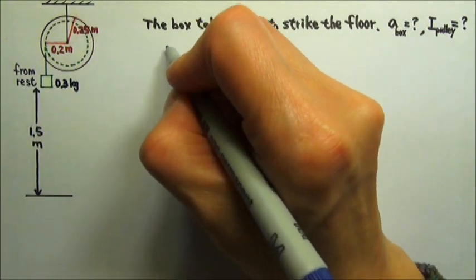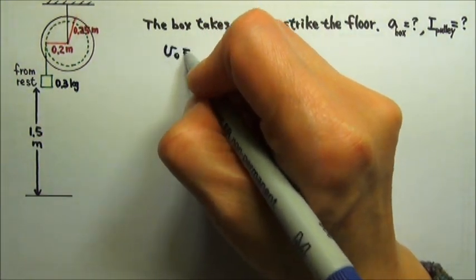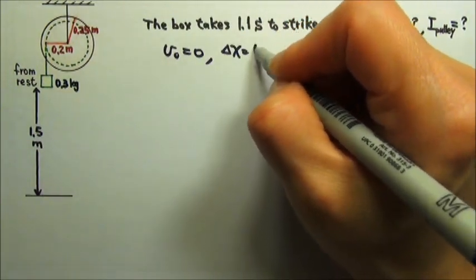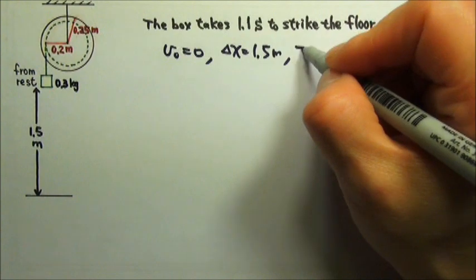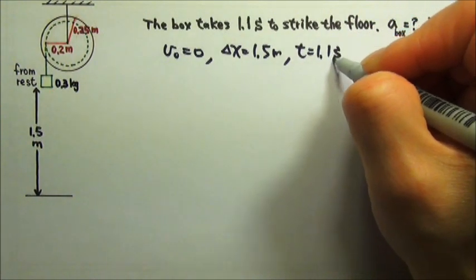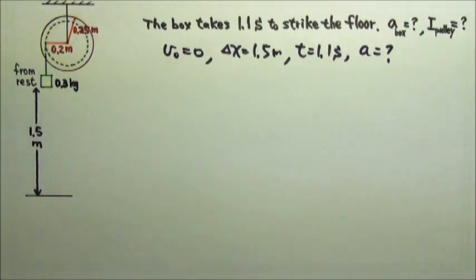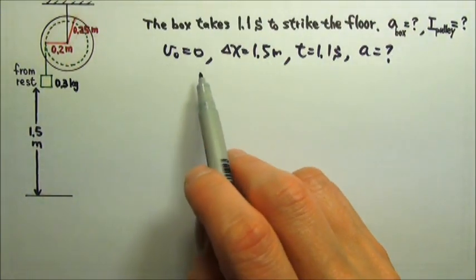It starts from rest, so the initial velocity is zero. The displacement is 1.5 meters, and the time is 1.1 seconds, and we want to find the acceleration. Which equation relates all these conveniently?